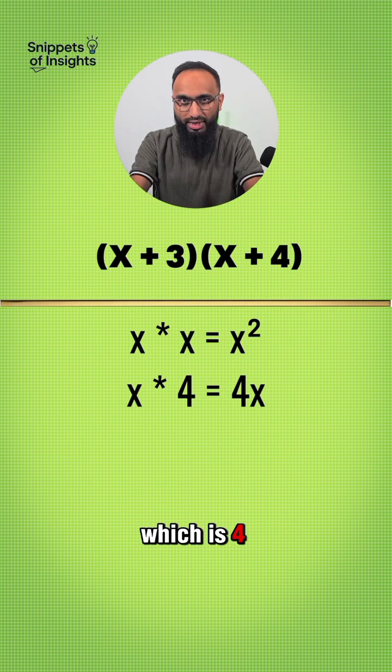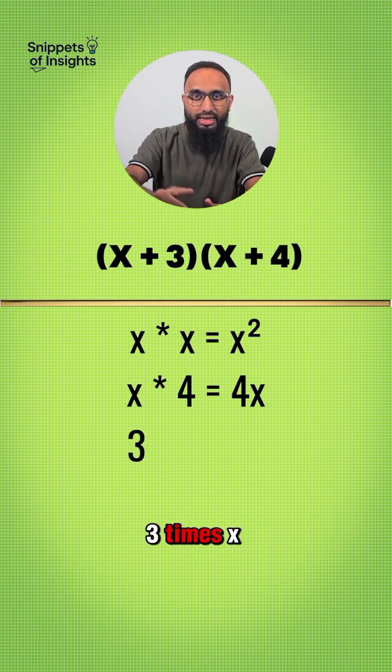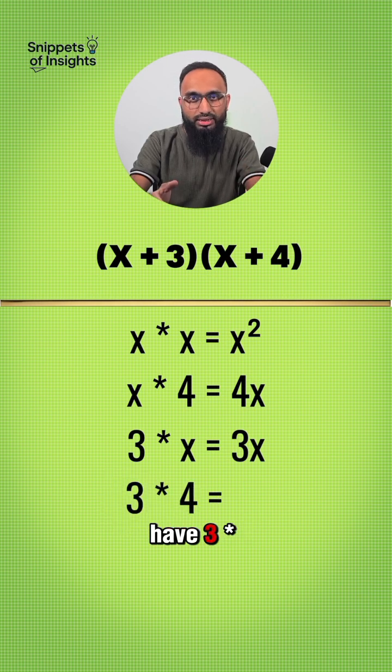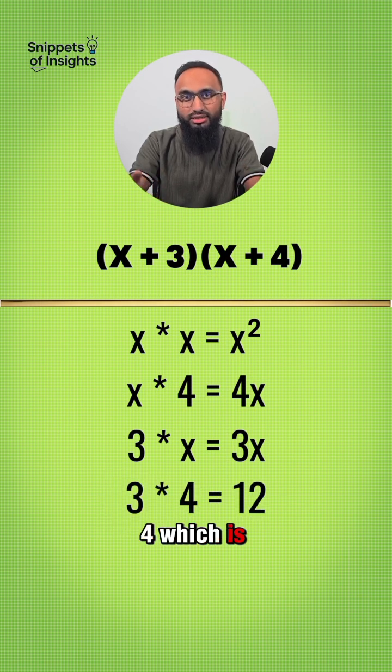Then we get x times 4, which is 4x. Then we get 3 times x, which is 3x. And then we have 3 times 4, which is 12.